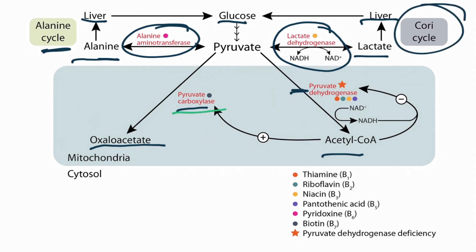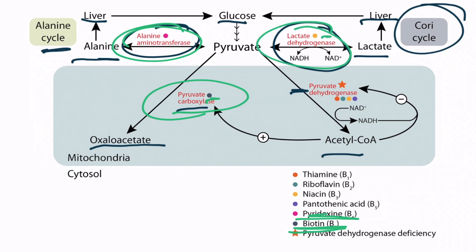Notice that pyruvate carboxylase requires vitamin B7 as a cofactor. Also notice that alanine aminotransferase requires vitamin B6. Lactate dehydrogenase requires vitamin B3. And pyruvate dehydrogenase requires several cofactors, which we'll talk more about in a minute.